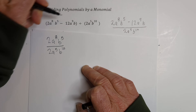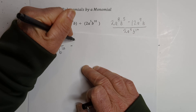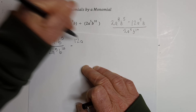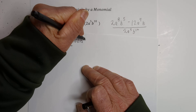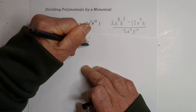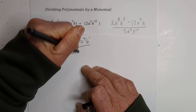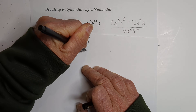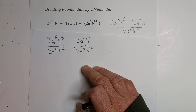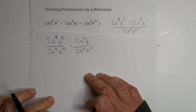So I've taken this and created a fraction, minus — I'm going to repeat the same thing — 12a to the 9th b (you can put a 1 there) over 2a to the 5th b to the 10th. So now I have two fractions.